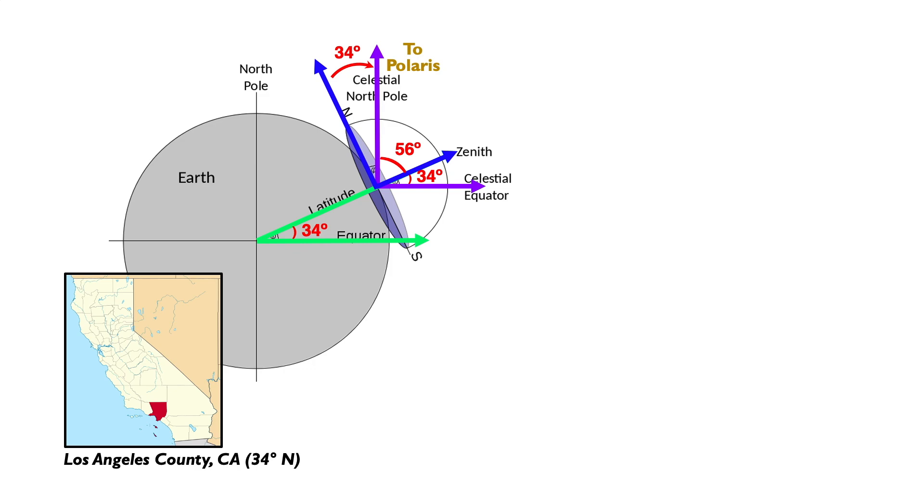Your latitude in L.A. and the altitude of Polaris from L.A. are both 34 degrees.